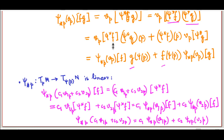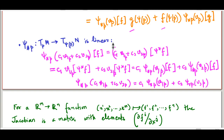Let us now turn to the formal name of this push forward function — the Jacobian. The name should be familiar to most of you from real analysis, multivariable real analysis. For a function from R^m to R^n which maps the numbers x1, x2, ..., xm to f1, f2, ..., fn, where each of these functions f1, f2, ..., fn are really functions of m real variables, the Jacobian is defined to be a matrix with elements given by the partial derivatives del fi / del xj — that is, del fi del xj is the (i,j)-th element of the Jacobian.